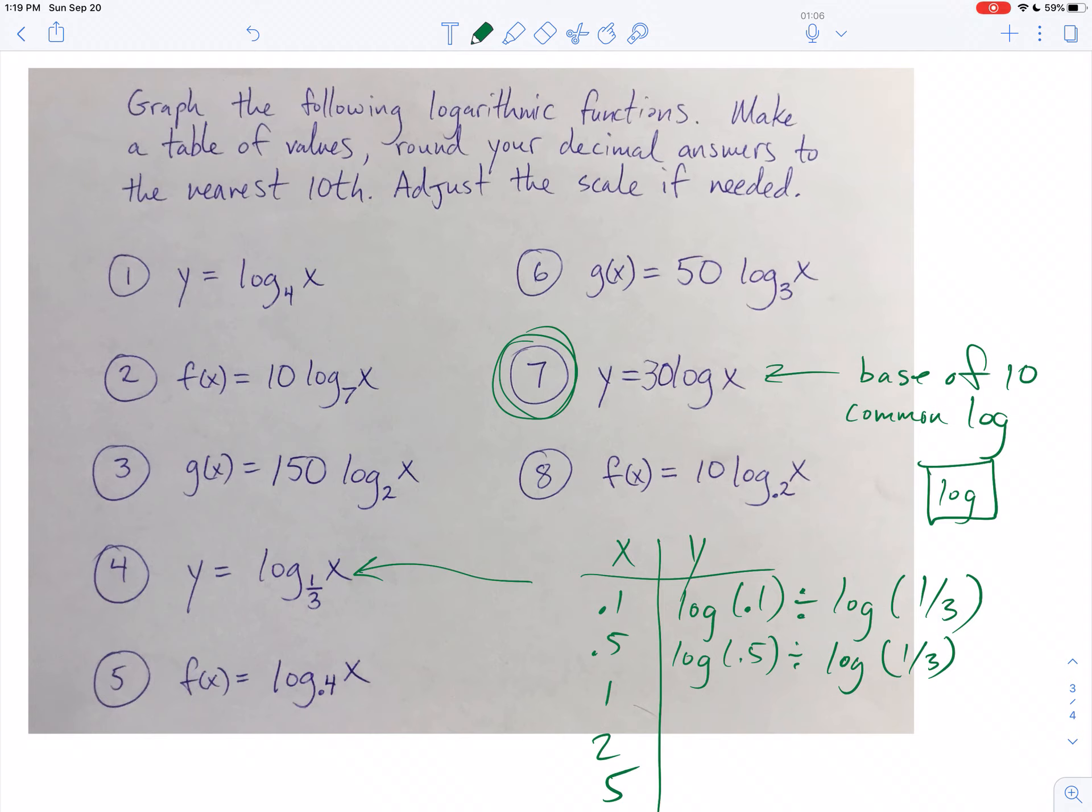So what does it say here? Graph the following logarithmic functions. Make a table of values. Round your decimal answers to the nearest tenth. Adjust the scale if needed. So for this one, your scale would be 30. Every dash on the y-axis should be 30. On this one, every dash on the y-axis should be 50. This guy, the scalar is a 1. They didn't write anything in, so don't change your scale.